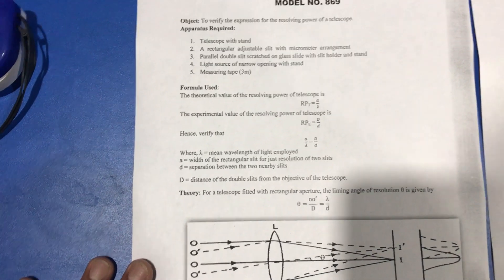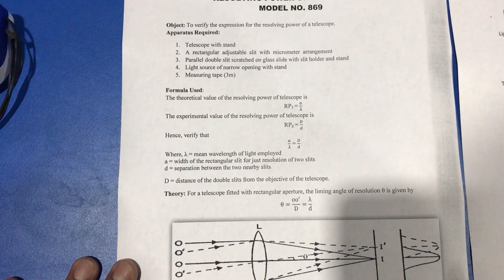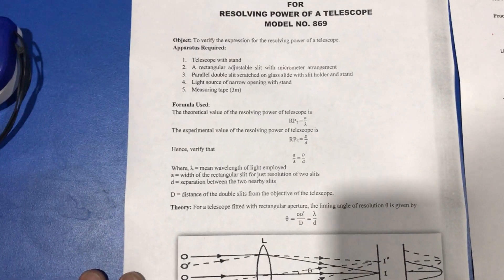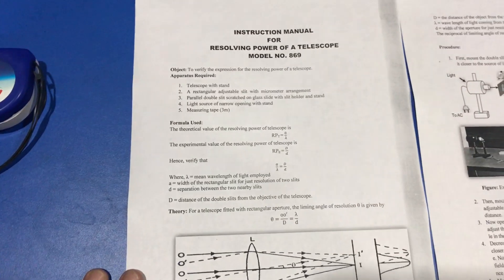Capital D is the distance of the double slit from the telescope. Thank you.